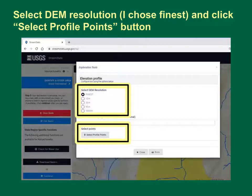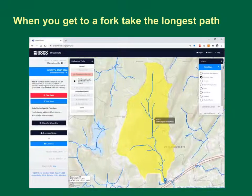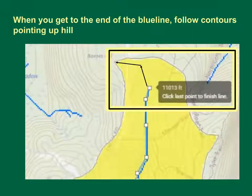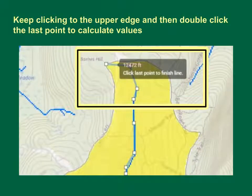Select the digital elevation model DEM resolution — I chose the finest — and click the Select Profile Points button. Start at the bottom of the basin, as designated by the rectangle at the bottom of the map, and click your way up the stream path. When you get to a fork in the stream, take the longest flow path. When you get to the end of the blue line indicating the stream path, follow the contours pointing up the hill to the basin divide. Keep clicking up the flow path to the upper edge of the basin.